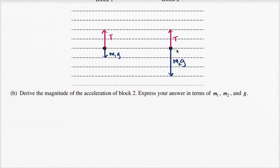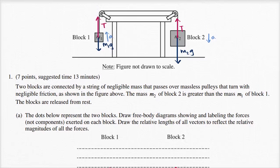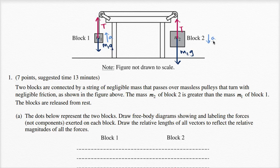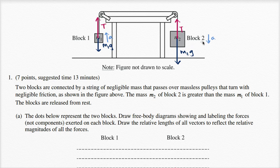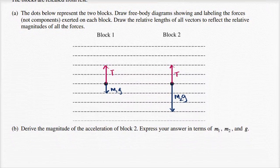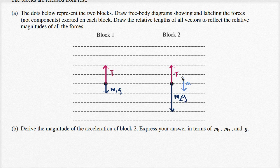We've already drawn the free body diagrams, which will help us determine the acceleration of block two. Let's think about what the acceleration is first. We know it's going to accelerate downwards because the weight of block two is larger than the weight of block one. They're connected by the string, so we know we're going to accelerate downwards on the right-hand side and upwards on the left-hand side.